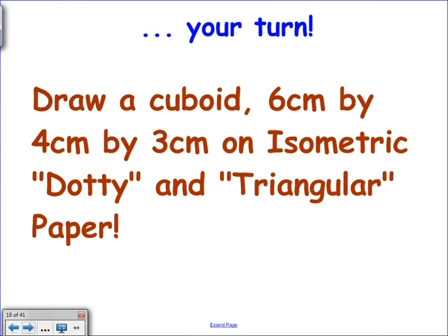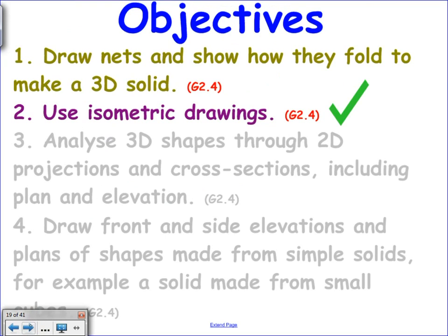Guess what's coming next. I'd like you to draw me an isometric drawing of a cube that is 6 by 4 by 3 on both dotty and triangular. That's isometric drawings. If you want more practice, I can give you lots. We could spend all day doing these. Are you happy with isometrics and isometric drawings coming across them?